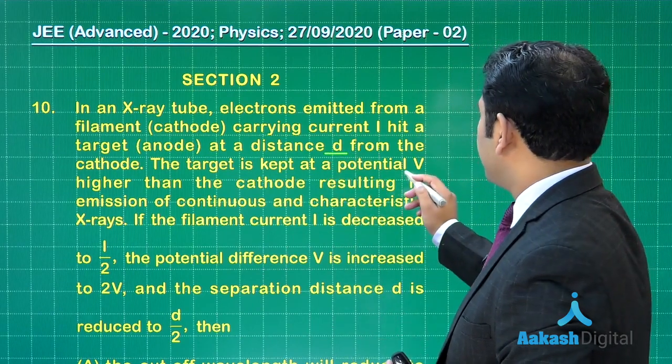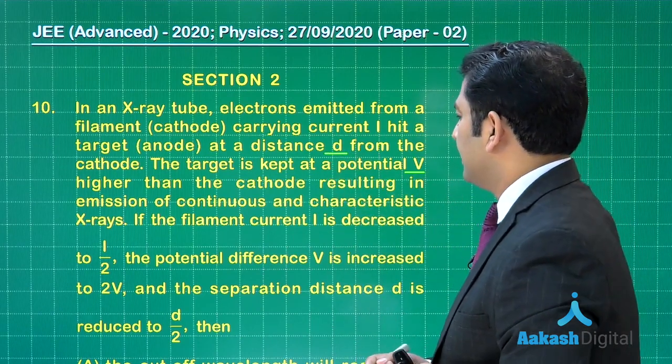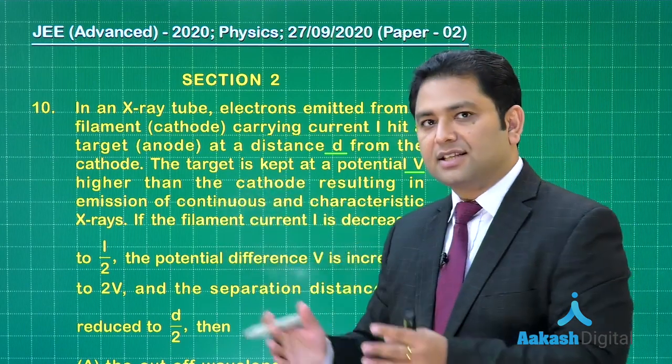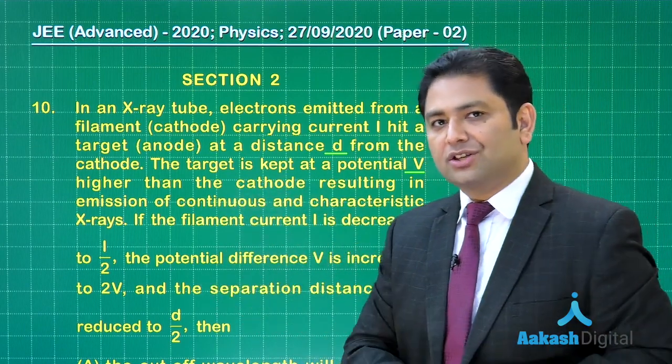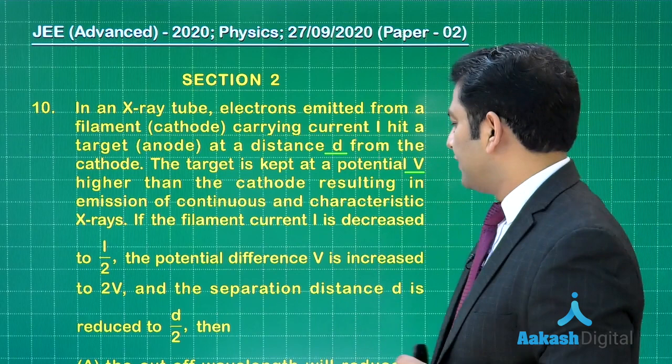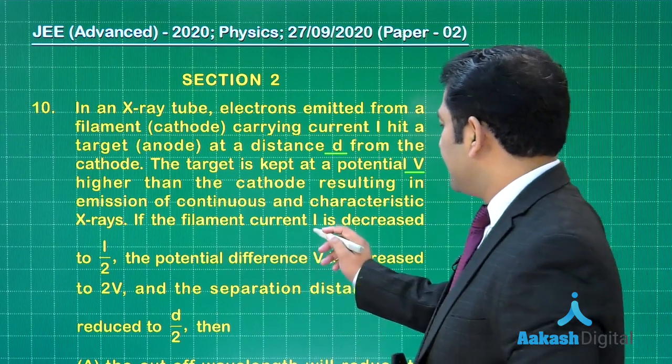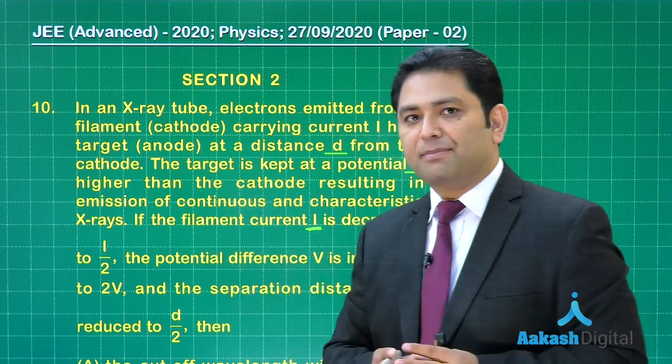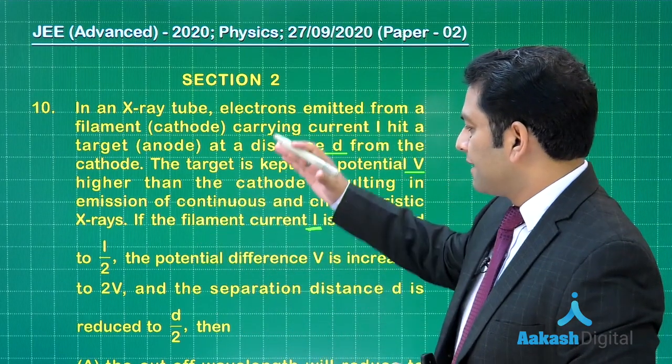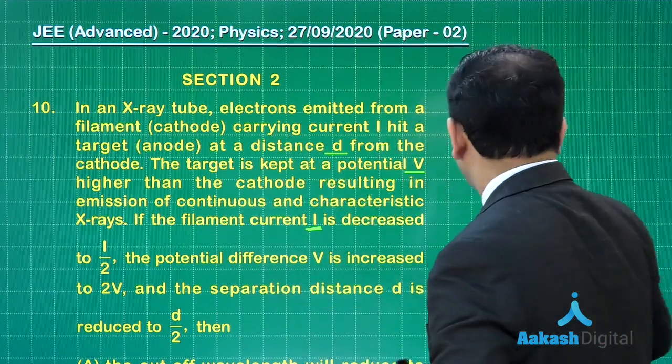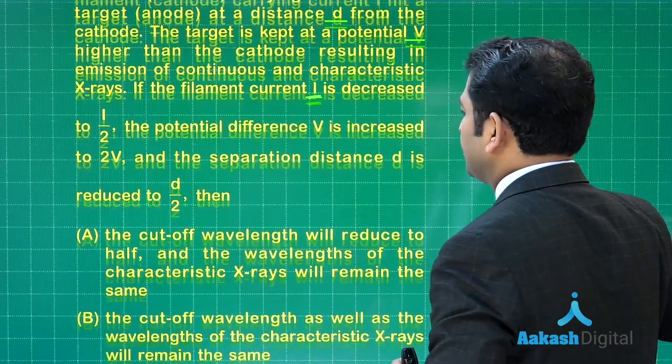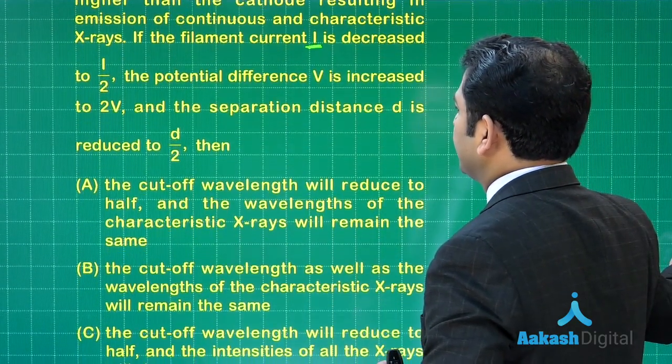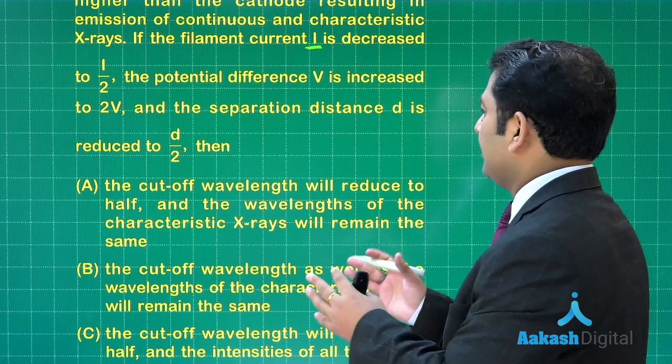This results in production of both continuous and characteristic x-rays. The filament current is i. These are the three parameters. After that there are changes: the filament current has been made i by 2, the potential difference has been made double, and the separation has been reduced to half.